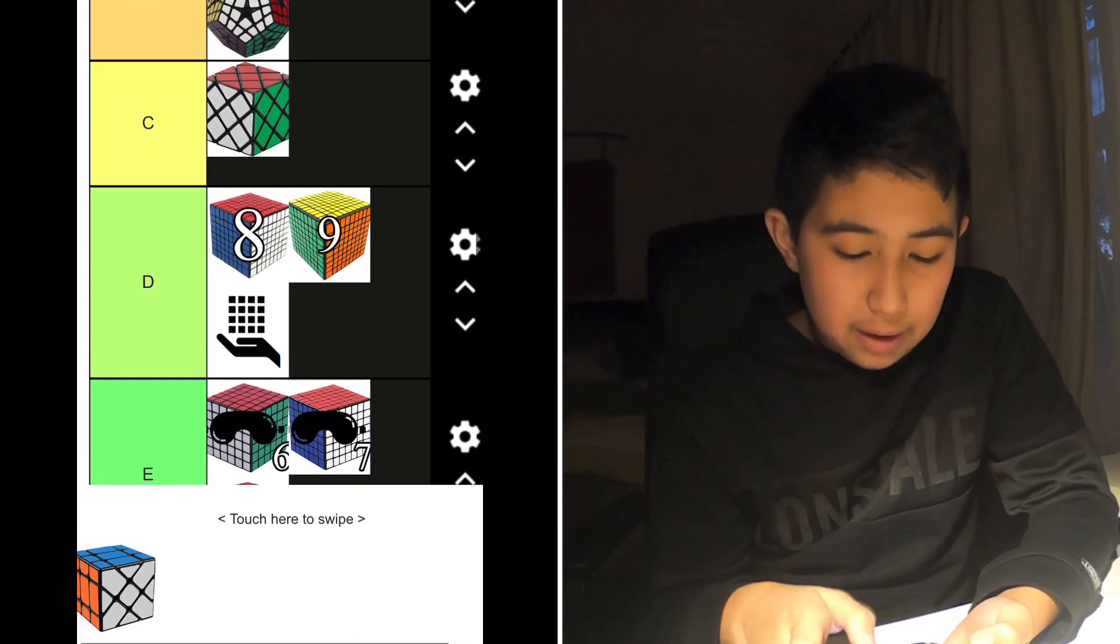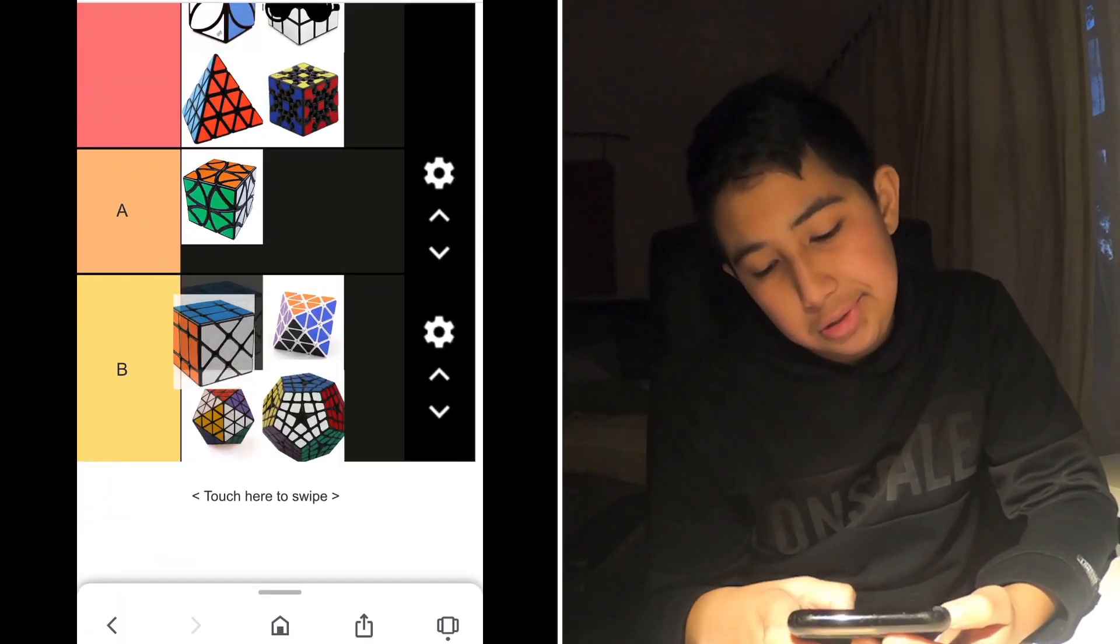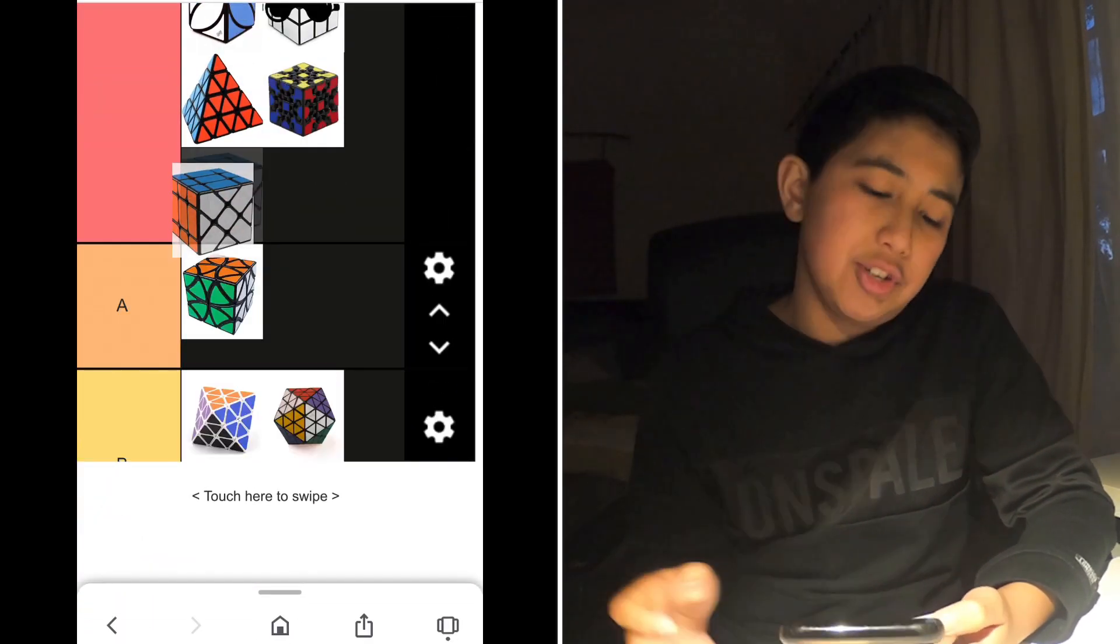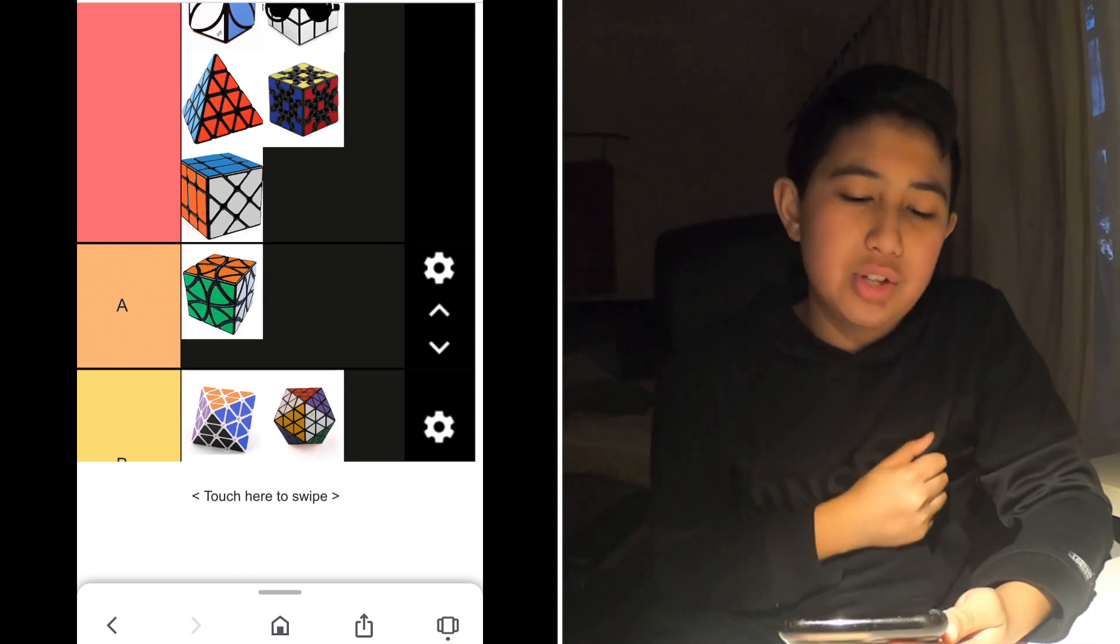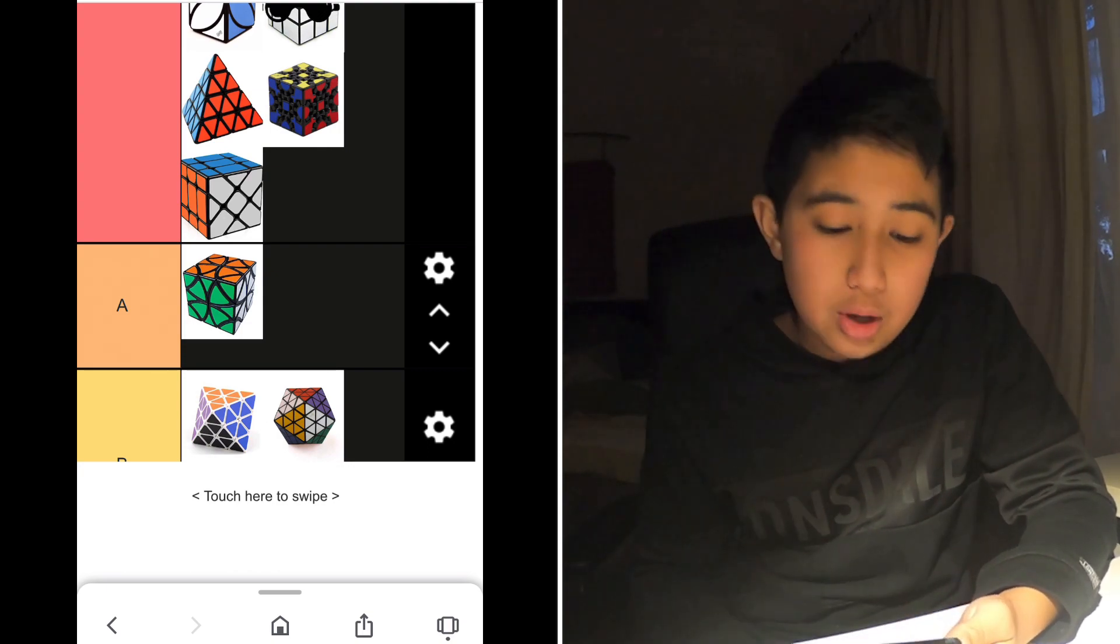Okay, and here we have the Fisher cube, which gets, I say, S tier. It's just a 3x3 shape mod and shape shift. It's really cool.